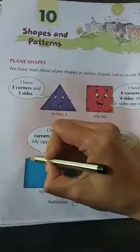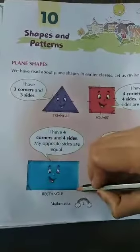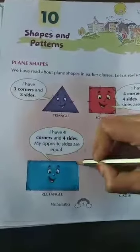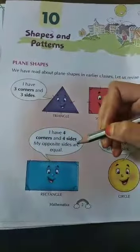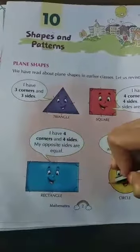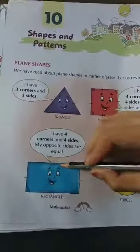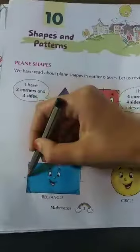Now see the next one — this is a rectangle. A rectangle has four corners: one, two, three, four, and four sides: one, two, three, four. In a rectangle, opposite sides are equal — this side is equal to this side, and this side is equal to this side.